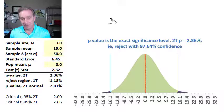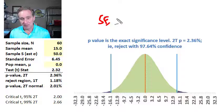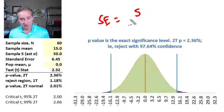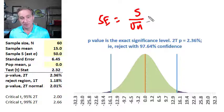We do need the standard error, and central limit theorem tells us that the standard error is the sample standard deviation divided by the square root of n.